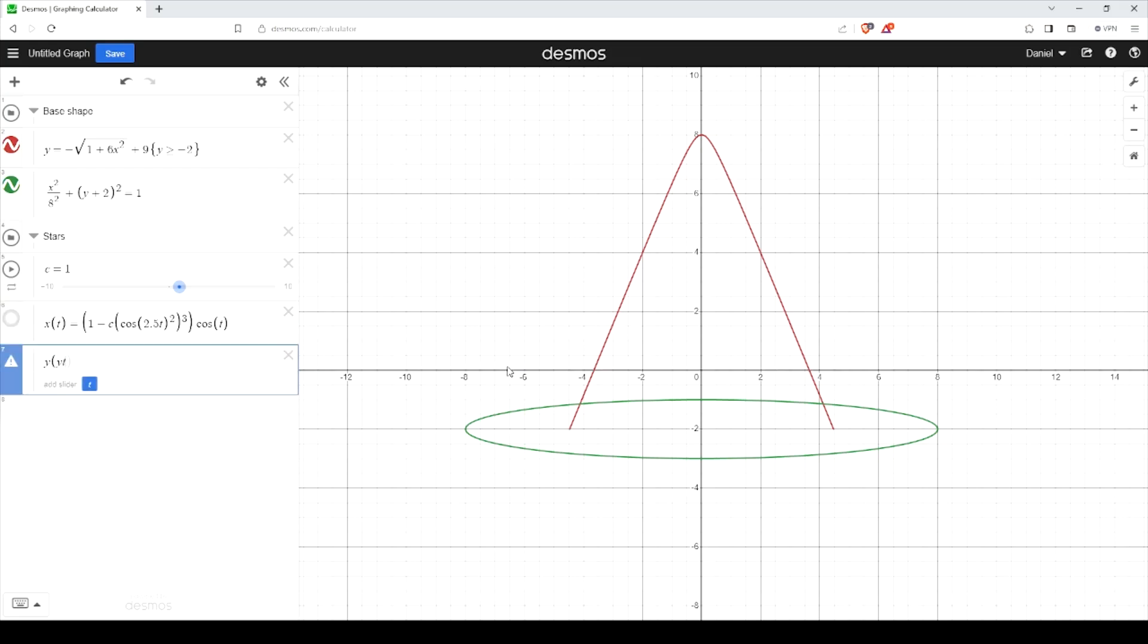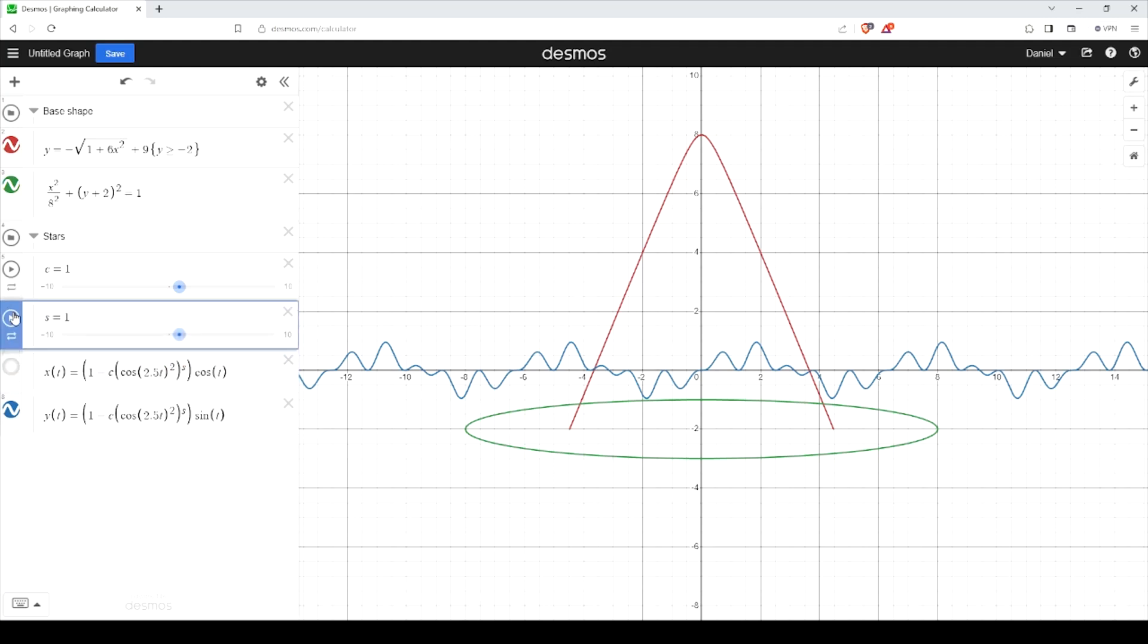For y of t, it is the same thing but instead of cosine of t it is sine of t. This is not a cube, this is an s. We are going to need a slider for that. Finally we'll put the two together - x of t, y of t.